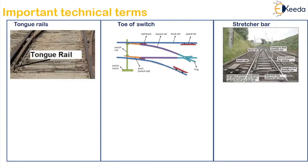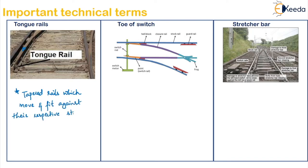Moving on to the tongue rail — it will normally be tapered and able to move. Tapered rails which move and fit against their respective stock rails are called tongue rails. The other name for tongue rails is switch rails, as they are basically used to switch from one point to another.